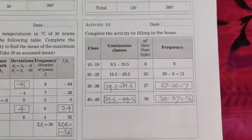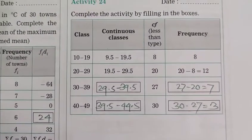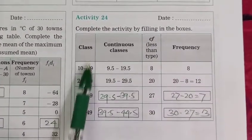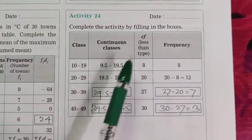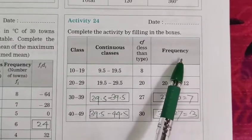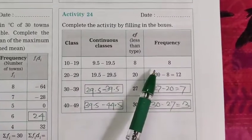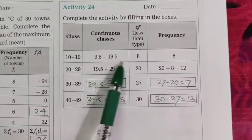Now today's our last activity, 24, number 24. This is the last activity. Filling in the boxes. In first column, class; second, continuous classes; and cf, less than type; and here frequency. The first is given 10 to 19, 9.5 to 19.5, 8, and frequency also 8.